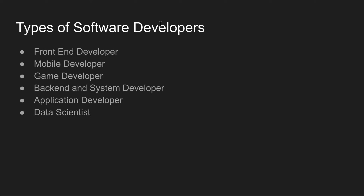If you are using data science, you can track daily activities. For example, consider a supermarket — essentials like bread and milk are placed on the last rack so the customer has to walk past all the other racks first. Data scientists analyze this kind of behavior and make recommendations based on the data.